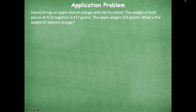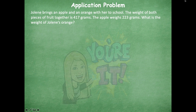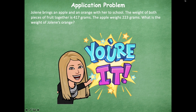We're going to get started with an application problem. It says: Jolene brings an apple and an orange with her to school. The weight of both pieces of fruit together is 417 grams. The apple weighs 223 grams. What is the weight of Jolene's orange? Go ahead and solve this problem — if you want to draw a tape diagram you are more than welcome to. Go ahead and pause the video, solve this problem, then click play when you're ready to go over it together.